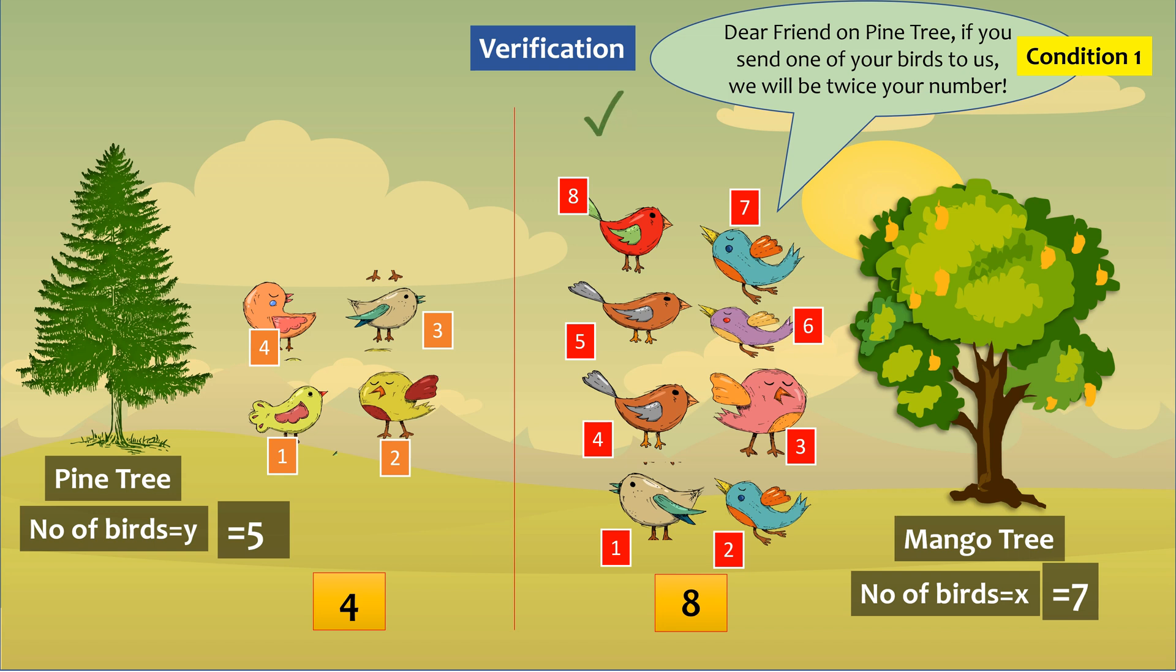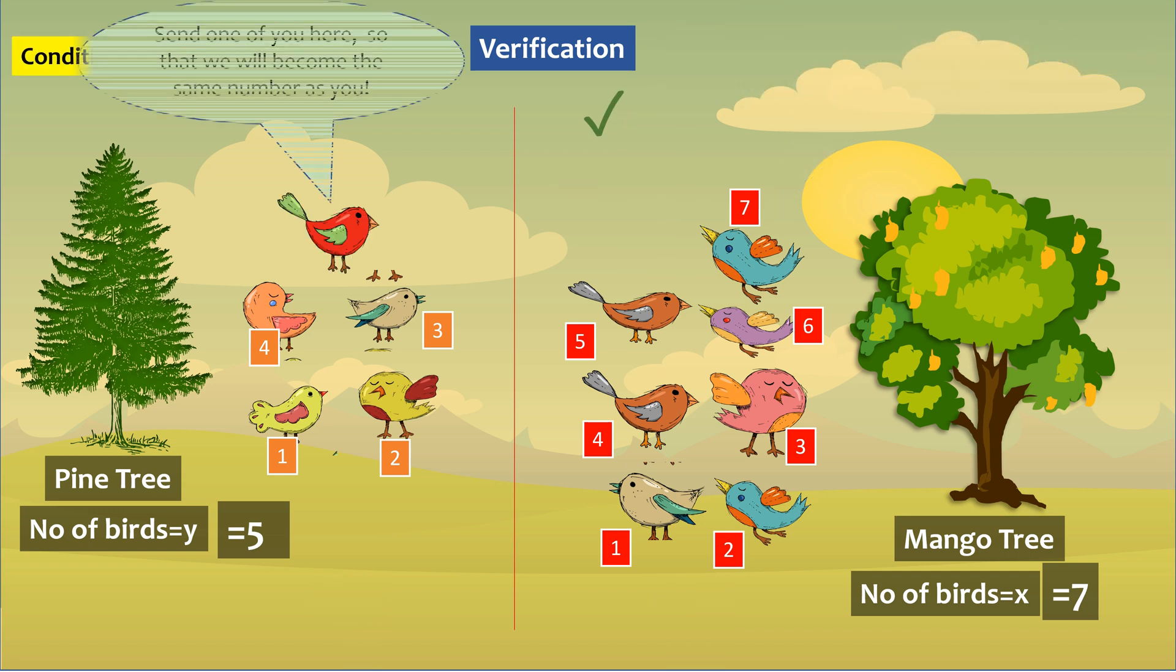Now condition 2 is, if pine tree receives 1 bird from mango tree, the total number of birds on pine tree will be equal to the number of birds on mango tree. So let this bird from mango tree come to pine tree. We can see that the total number of birds on pine tree is now 1, 2, 3, 4, 5, 6 and that on mango tree is also 6. Since both are 6, this condition is satisfied too.